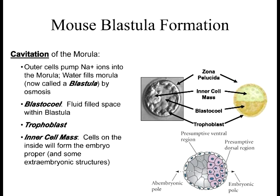Monozygotic twins have the same genetics because they arose from a splitting of the inner cell mass through mitosis, so they have exactly the same genetics initially. However, many environmental factors change their features — even monozygotic twins don't have the same fingerprints.